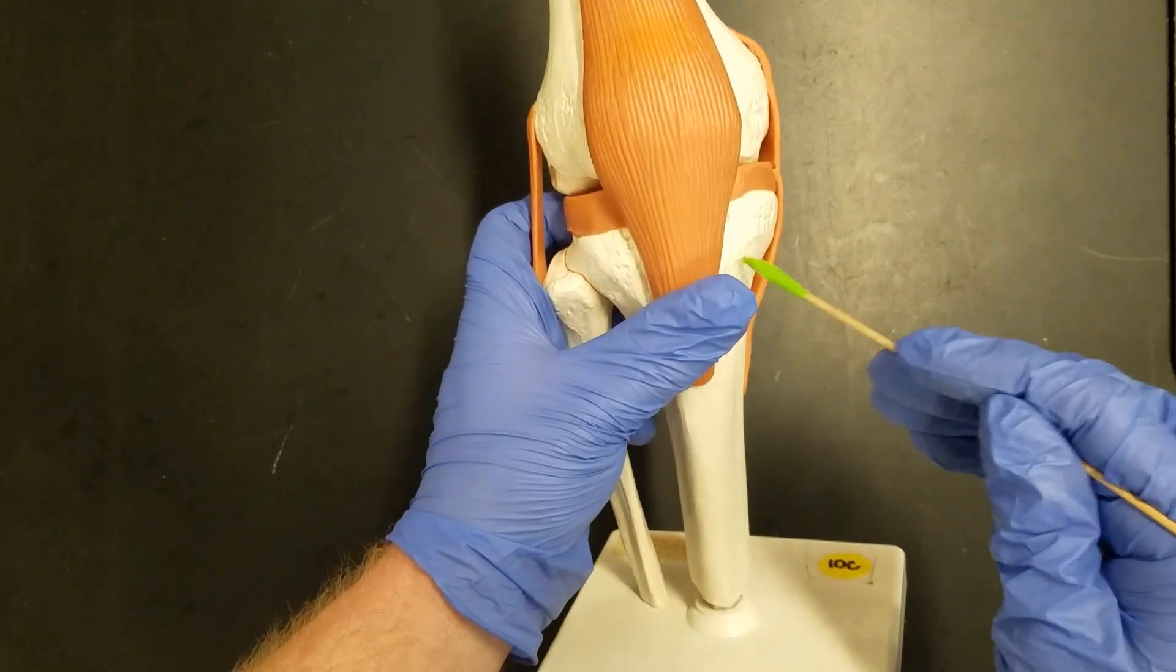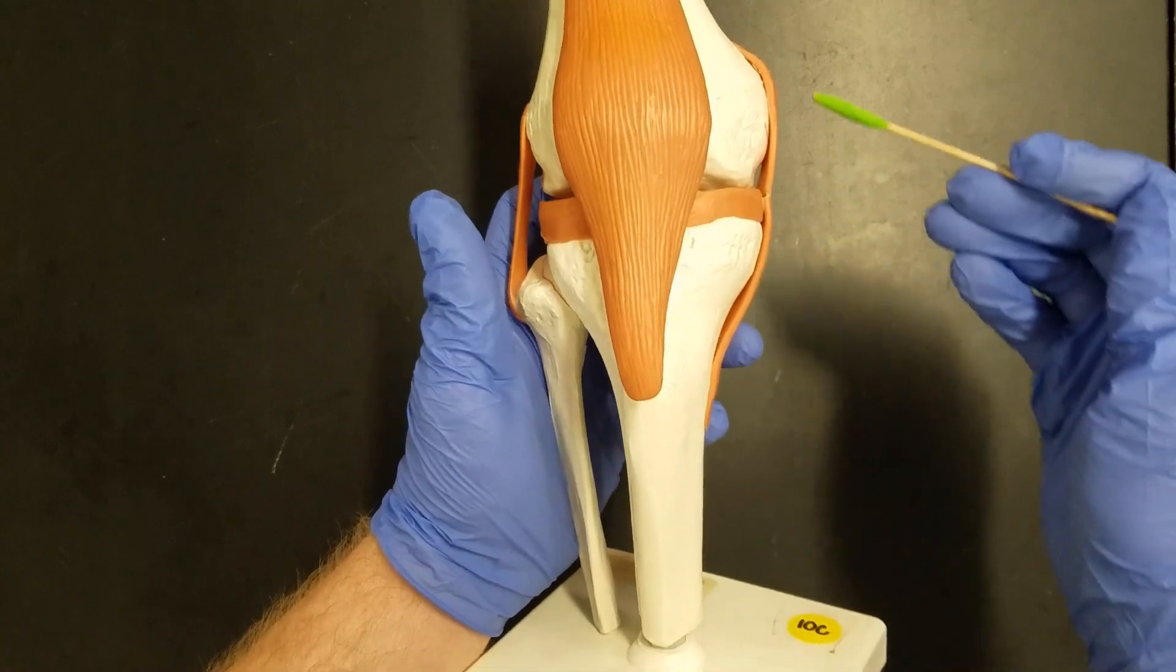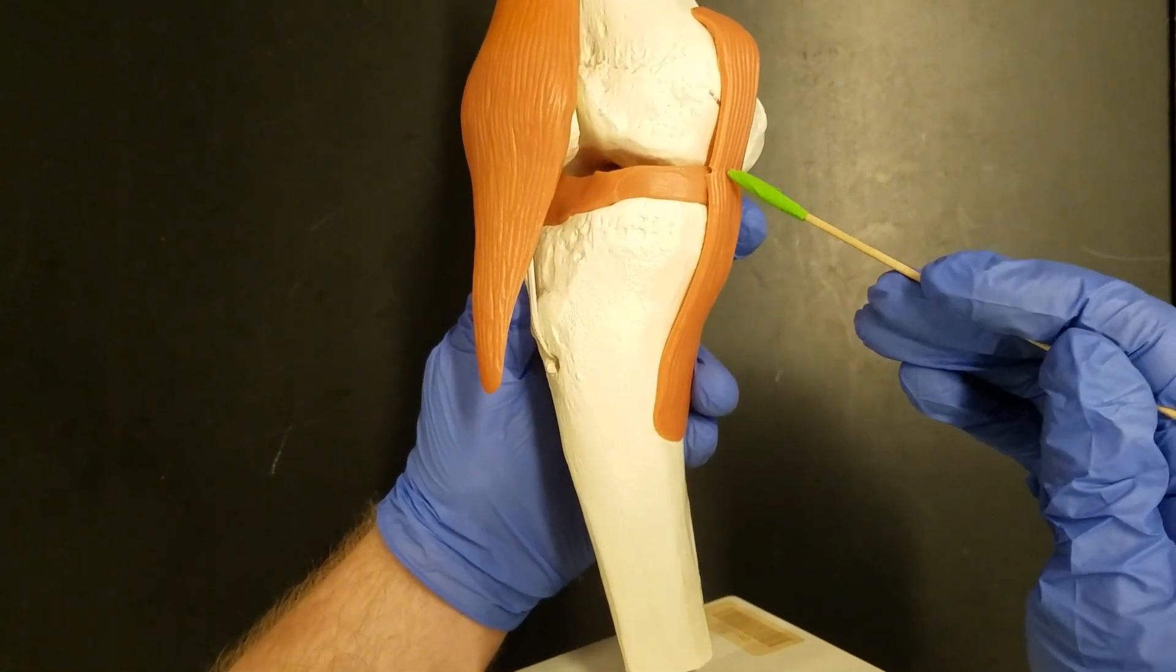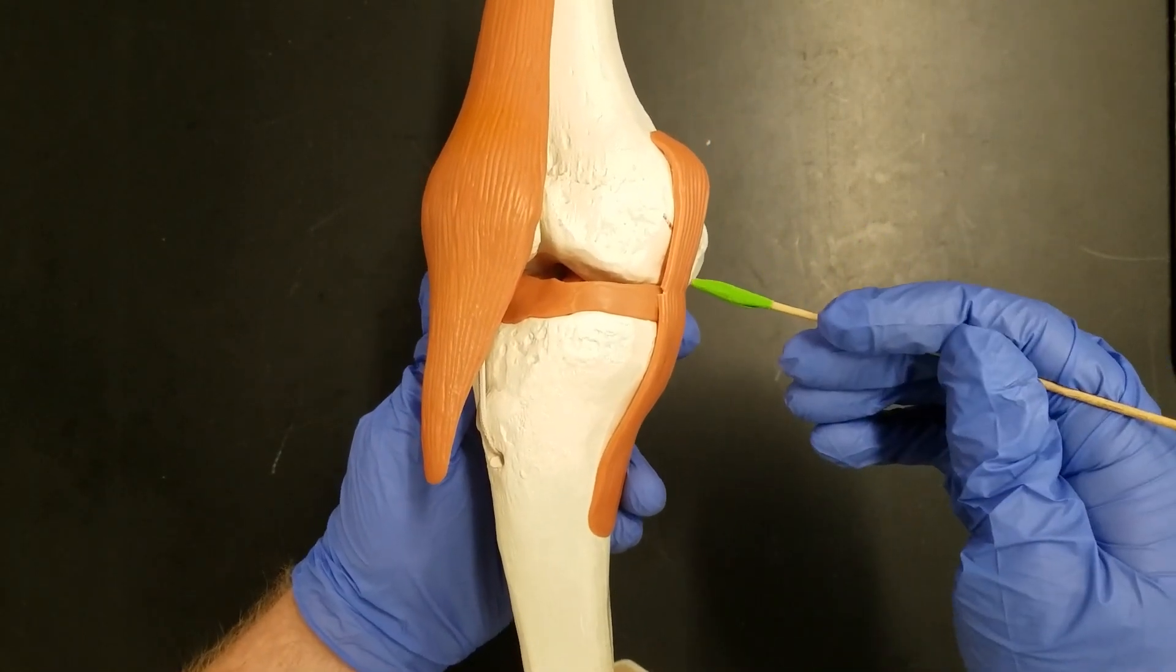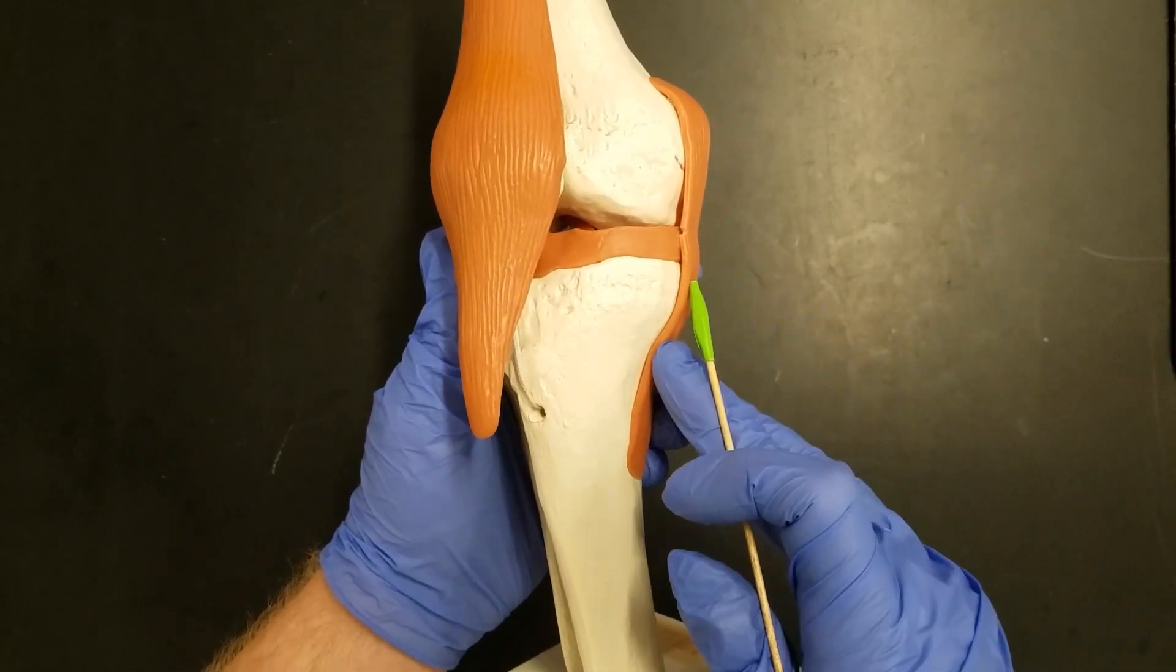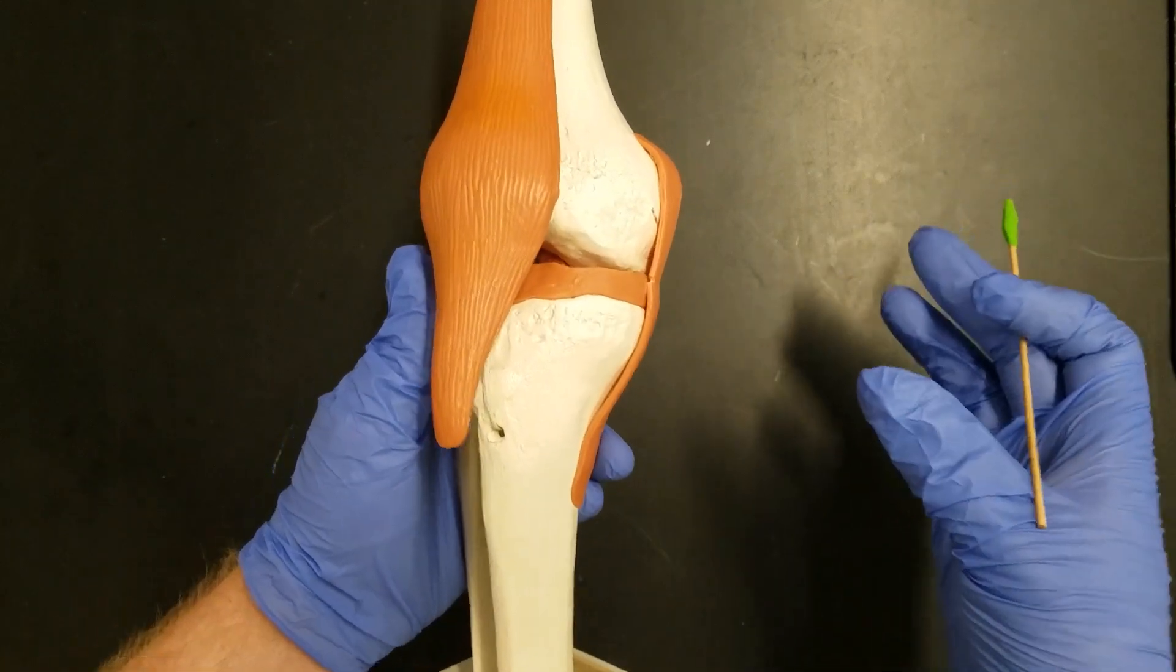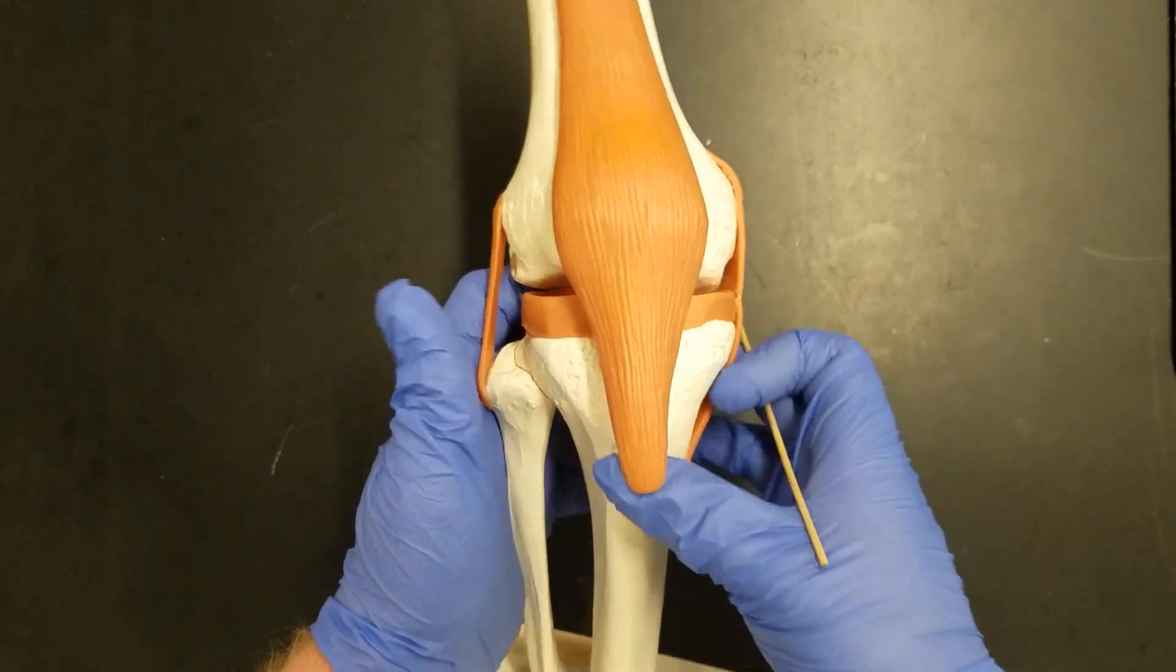Now here we have our tibia and here we have our fibula. The collateral ligament that attaches to the tibia is called the tibial collateral ligament. Older sources commonly refer to this as the medial collateral ligament because it's on the medial side. You can use either one, so medial collateral ligament or tibial collateral ligament. I like tibial because it tells you which bone it attaches to.